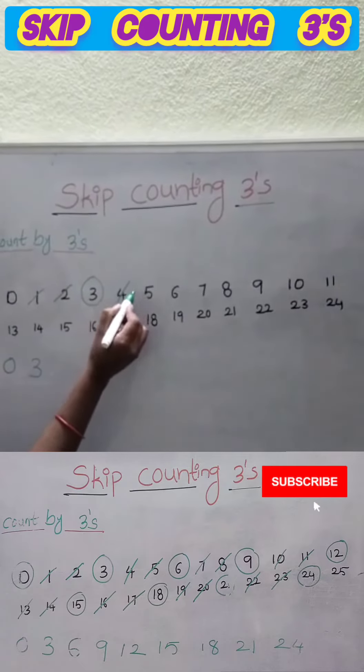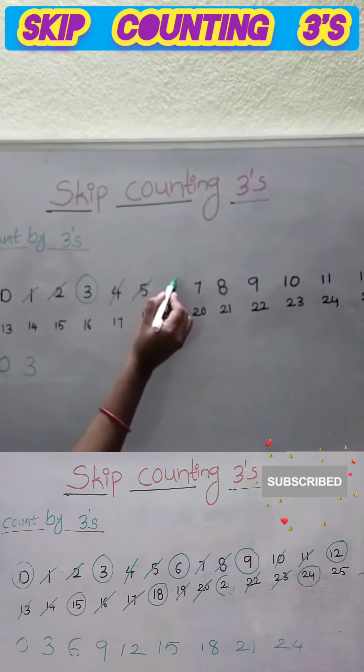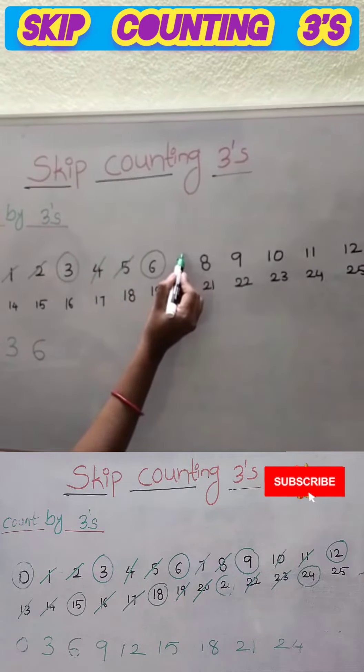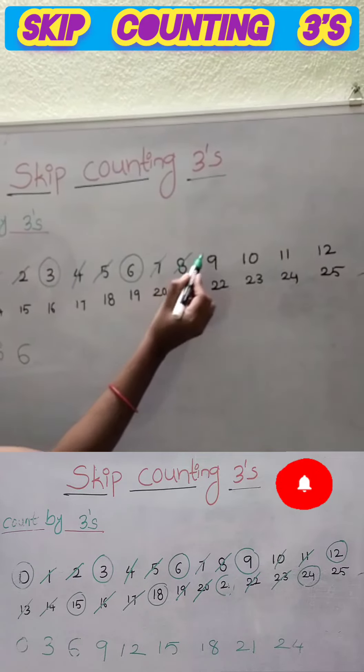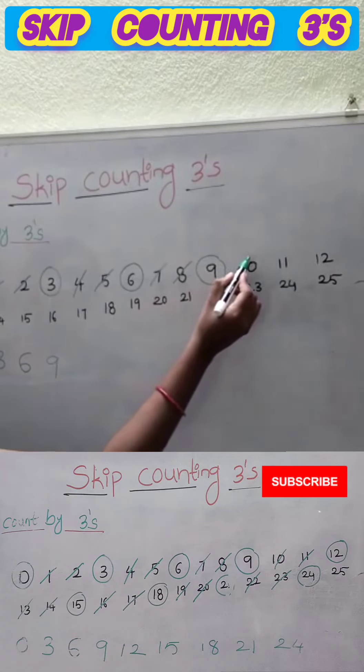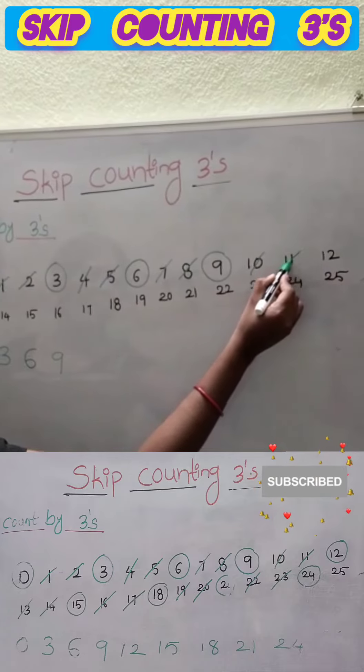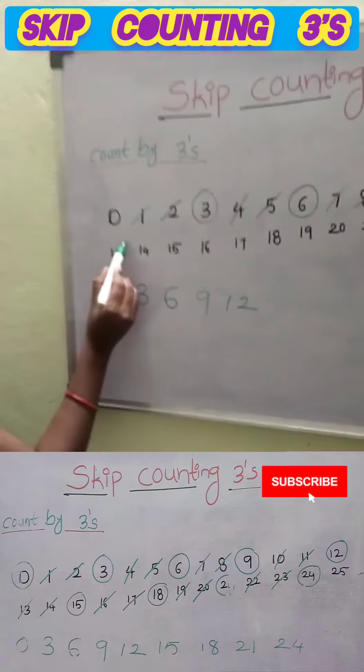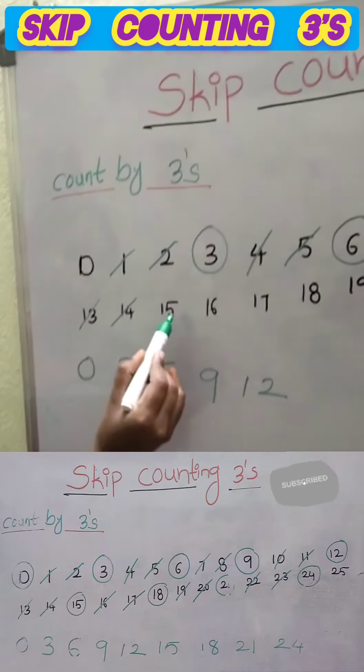Next, skip two numbers 4 and 5, write 6. Next skip 7 and 8, write 9. Next 10 and 11, next number will be 12, 13, 14, 15.